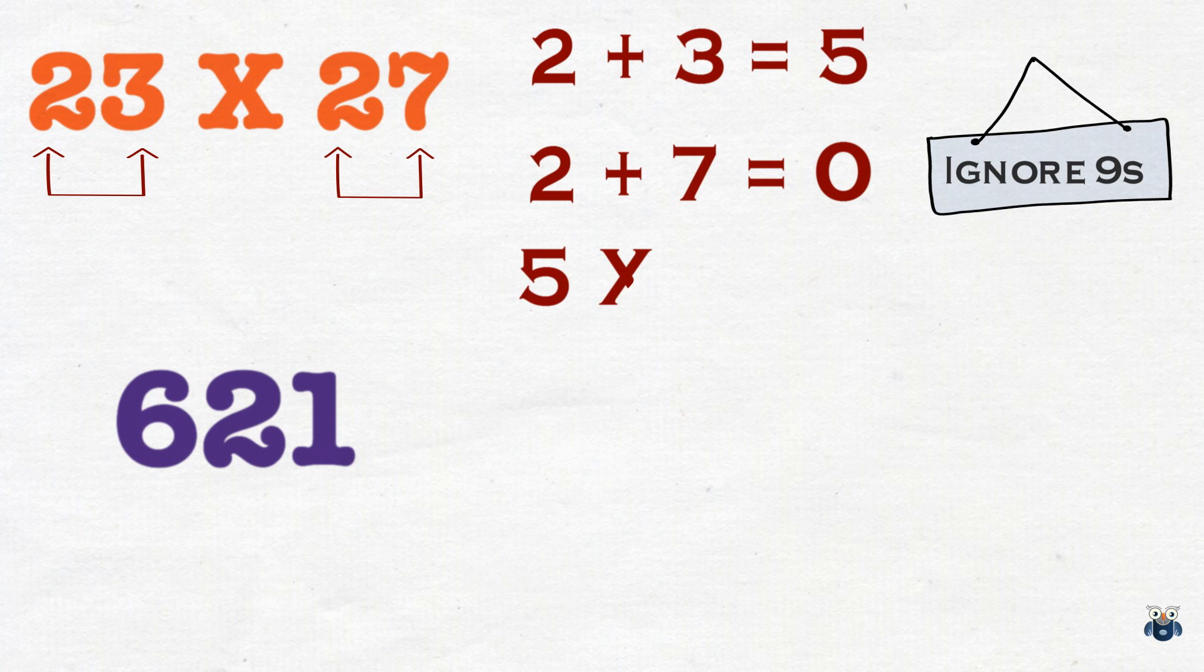Now, just as we multiply 23 and 27, we now multiply 5 and 0. 5 times 0 is 0. Please make a note of this. This is our first result.